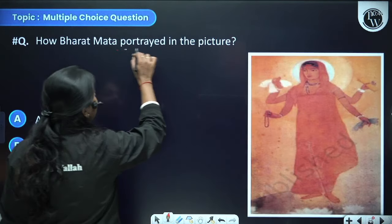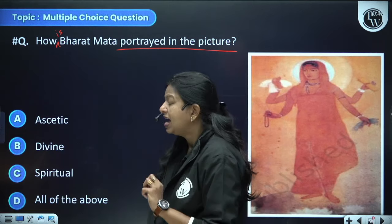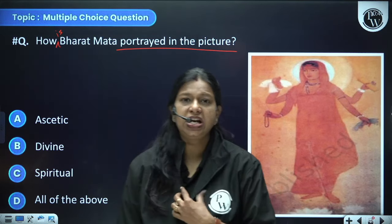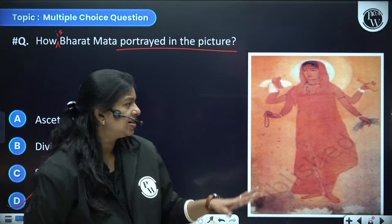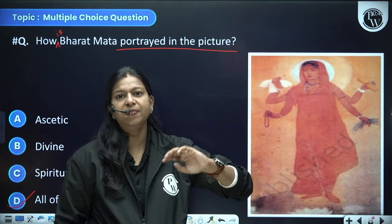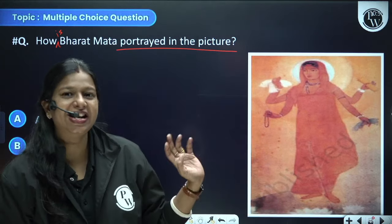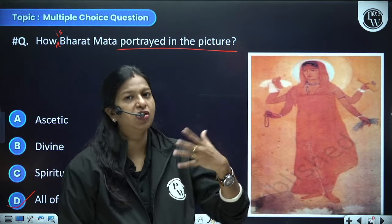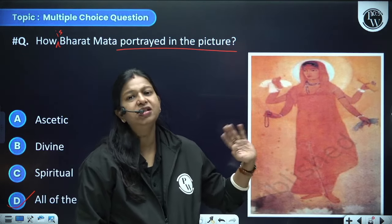How is Bharat Mata portrayed in the picture — as an ascetic, divine, spiritual, or all of the above? She is represented as an ascetic figure with spiritual divinity and a connection to a higher power. However, this image could not become very popular because it represented just one religion — a Hindu version of Bharat Mata — which was not fair since India is a combination of different religions.